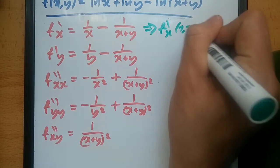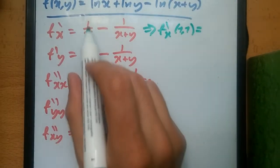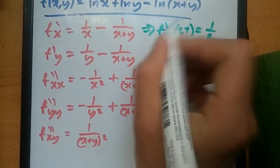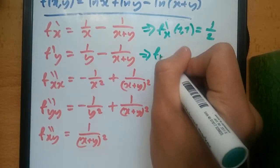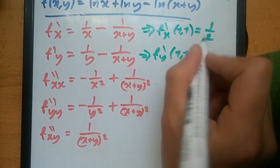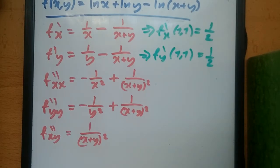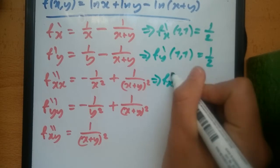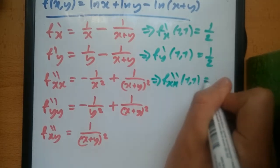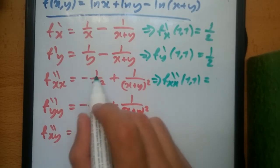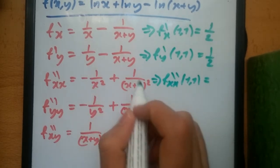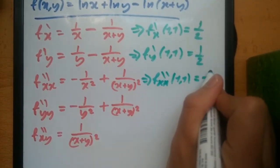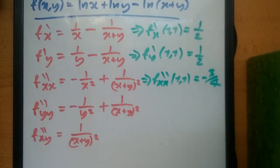F prime (1,1) will give you, so 1 here will be 1 minus 1 over 1 plus 1. So this is half, 1 minus half is half. F y prime (1,1). Again, 1 minus half is half. Let's see. Now this one. F xx prime (1,1). What do we have here? Okay, so 1 over 1 squared, so minus 1 plus 1 over 2 squared, 1 over 4. So minus 1 plus 1 quarter is minus 3 over 4. Okay, so hopefully I'm getting this one right.